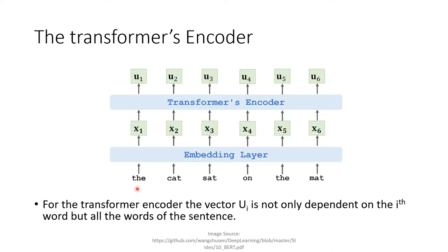For example, the sentence 'the cat sat on the mat' is fed into an encoding layer and then a transformer encoder. Each and every output of the transformer encoder is dependent on each and every input of the embedding layer. So, for example, the output U2 is not only dependent on the input 'cat' but also dependent on the other words — 'sat on the mat'.